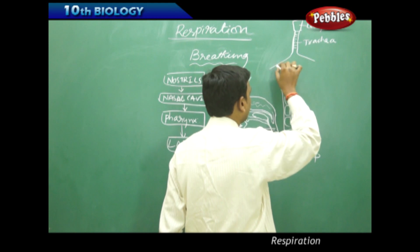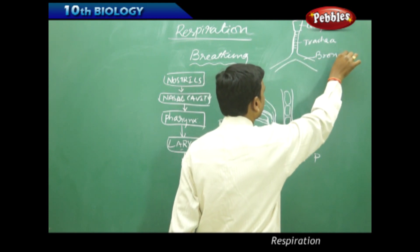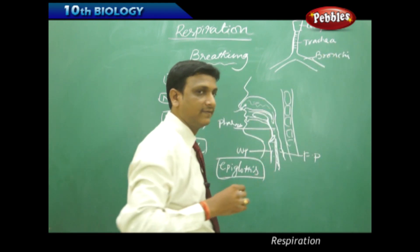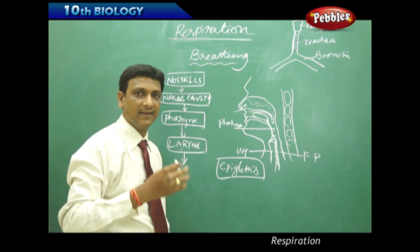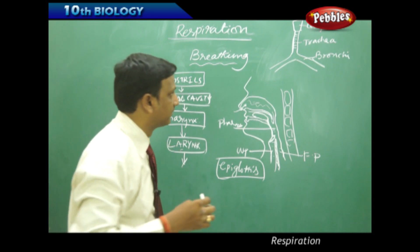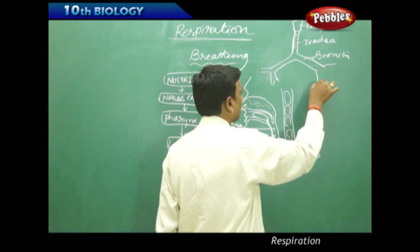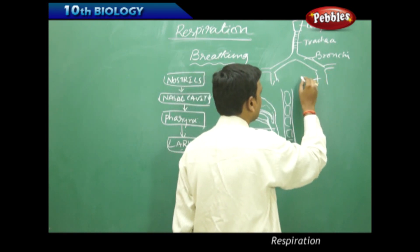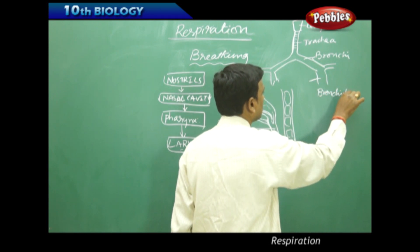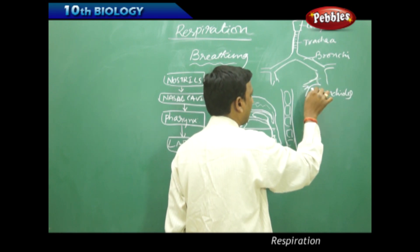Now the trachea branches into two bronchi. Two bronchi: left bronchi into left lung and right bronchi to the right lung. The bronchi are further branched into smaller branches called bronchioles. The bronchioles are the further branching, fine branching.